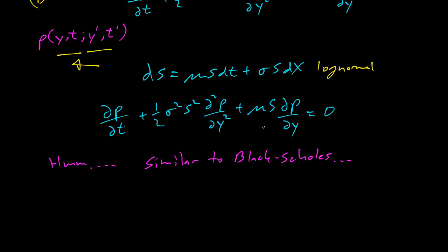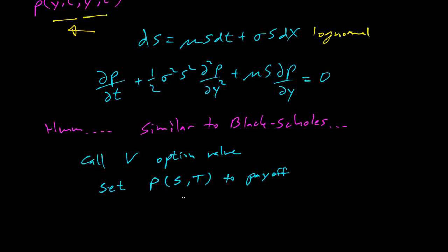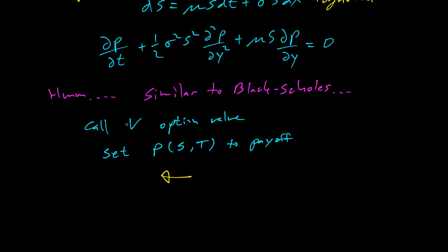So let's think how do we use this to value an option? Let's call V our option value. Then we can set p of S comma capital T to our payoff. We're working backwards, so we set our initial conditions for p at the end and we're working backwards with the backwards Kolmogorov equation.